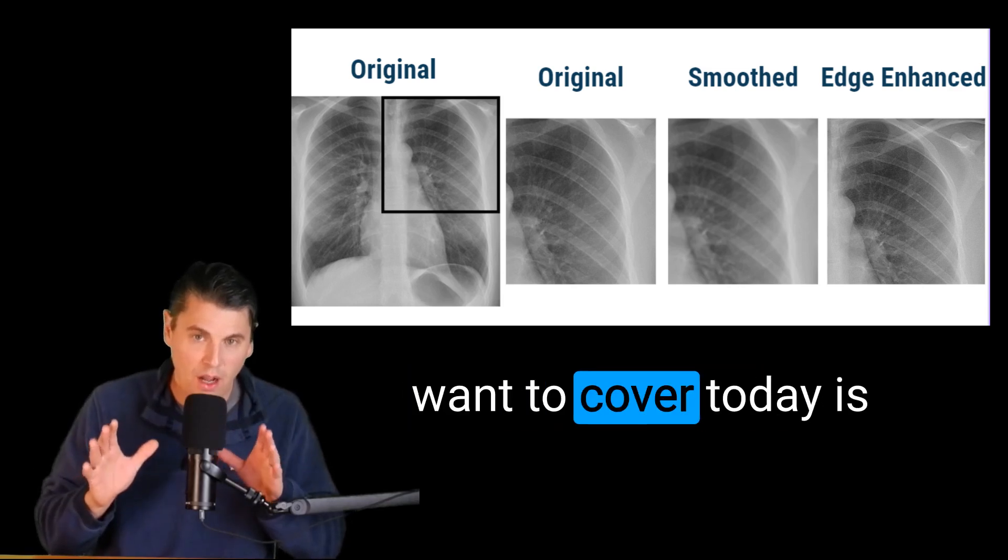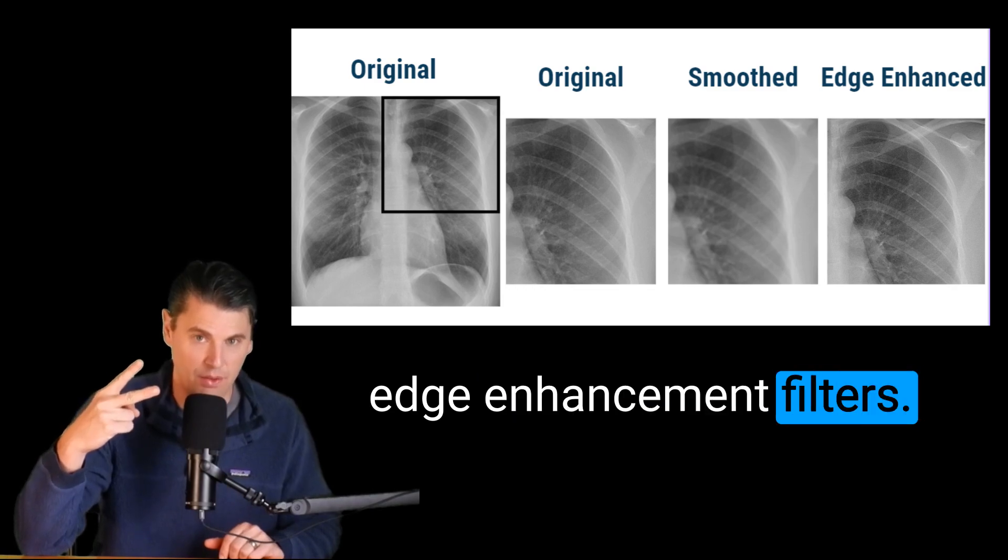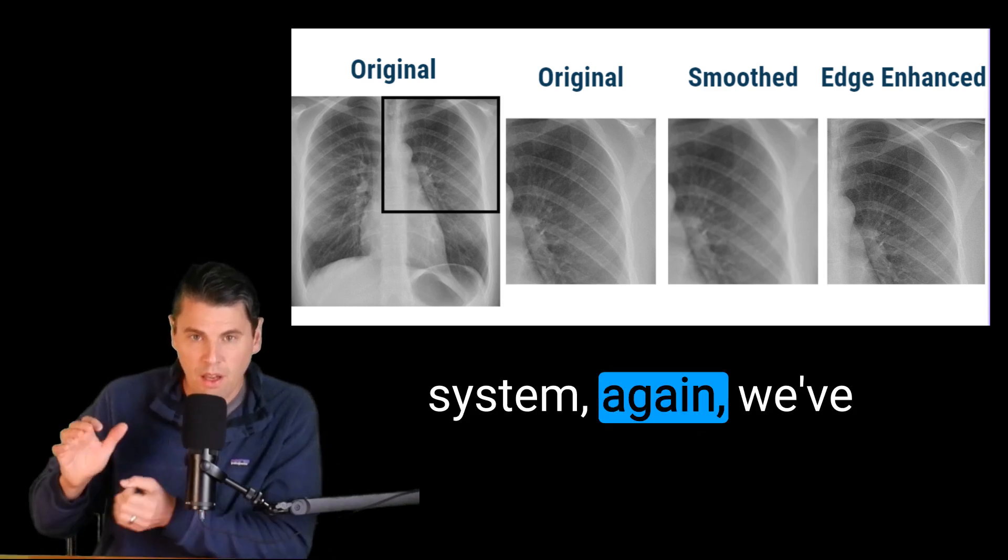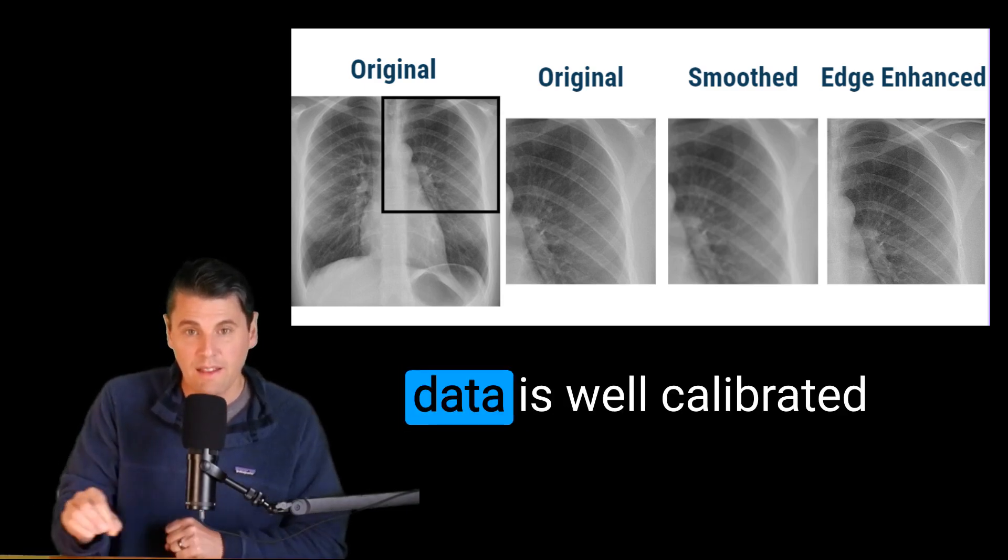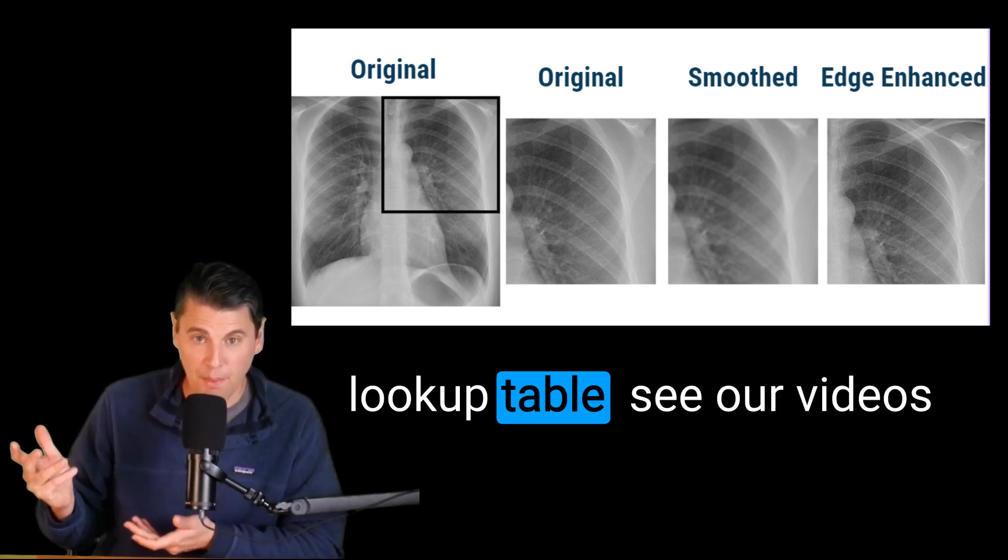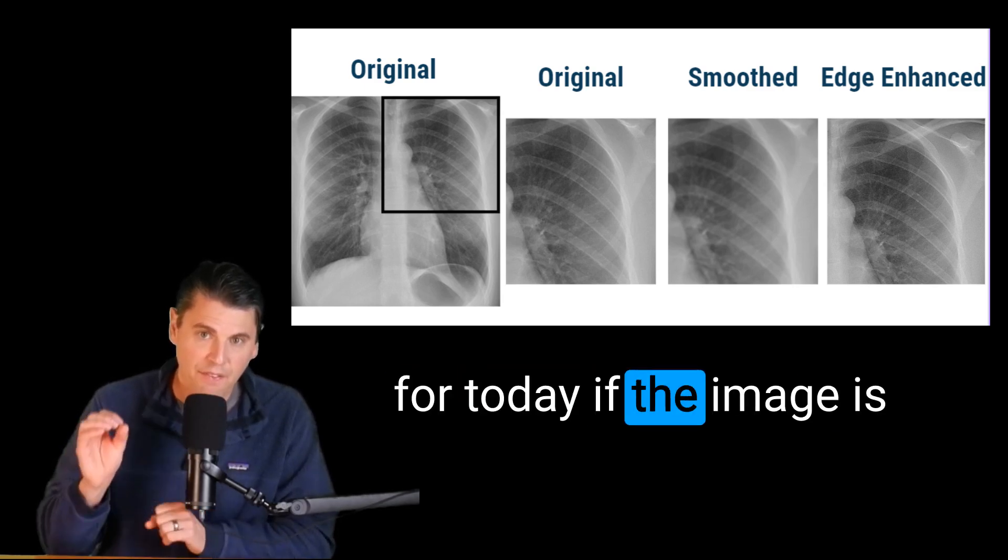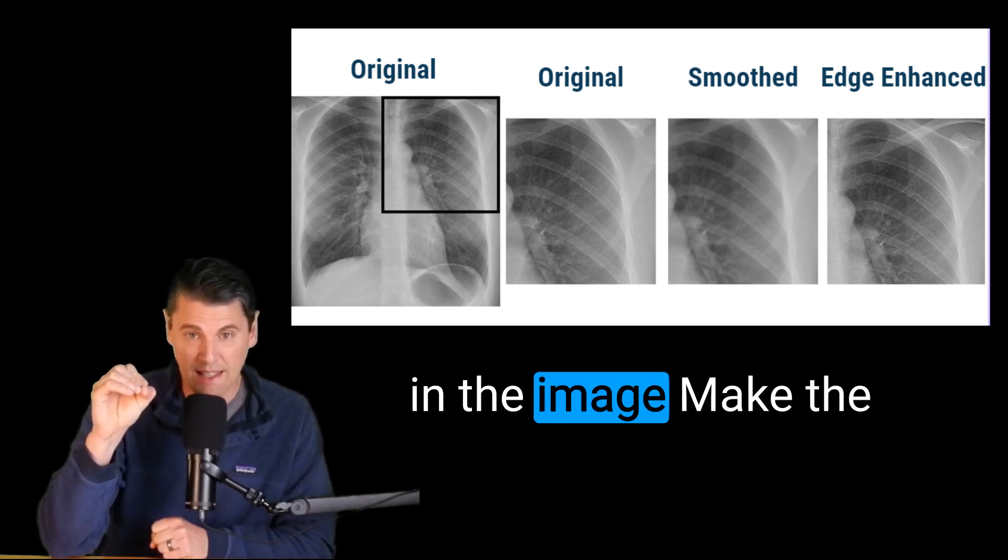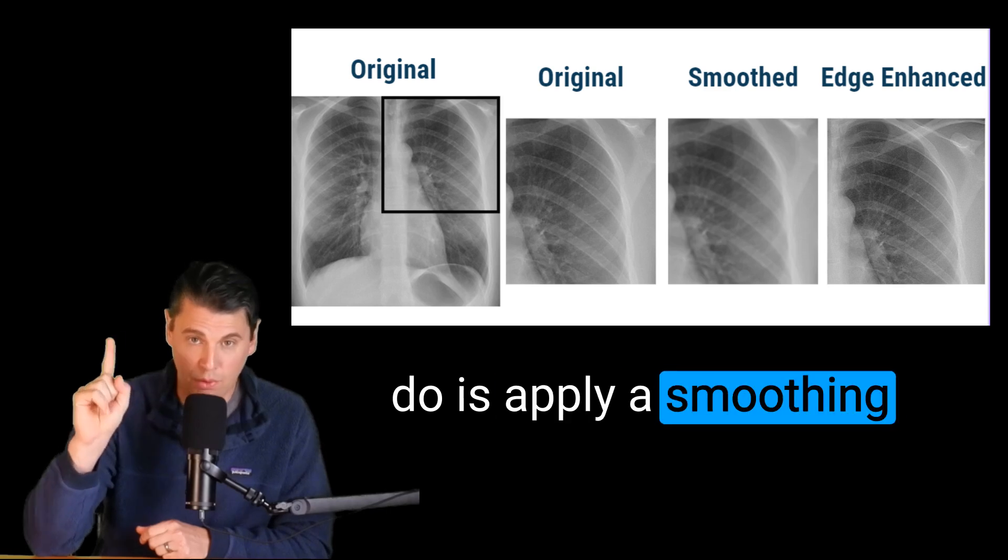The big things we want to cover today is smoothing filters and edge enhancement filters. Coming off of the x-ray system, we've talked about there's initial steps which are done to make sure the data is well calibrated. We want to make sure it has a proper lookup table. But for today, if the image is a little bit noisy and you'd like to reduce the noise in the image, make the image a little bit smoother, the first thing you could do is apply a smoothing filter.